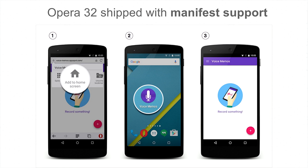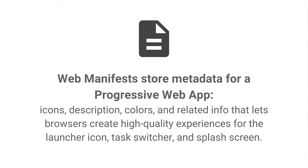Back in September, we shipped Opera 32 for Android with support for Manifest. This may seem easy, but it was actually quite complex — it wasn't just a Chromium intake, we had to do quite a bit of work including a lot of interaction with the Android top layers and a rewrite of our startup sequence to make progressive web apps work well in Opera. So a little bit about the Web Manifest: it stores metadata for a progressive web app — icons, description, colors, and related info that lets browsers create high-quality experiences for the launcher icon, the task switcher, splash screen, and so on.